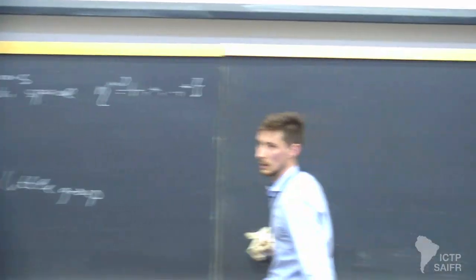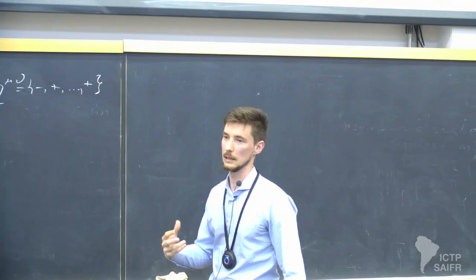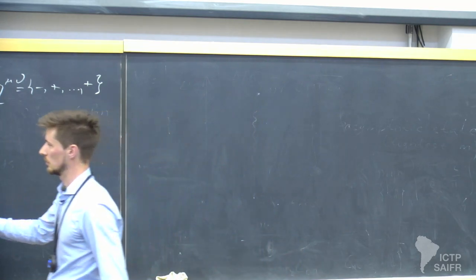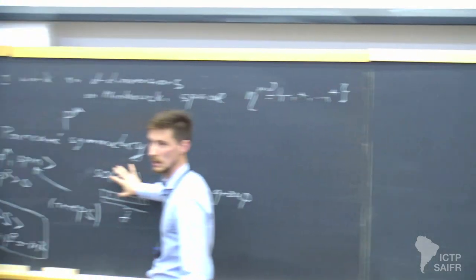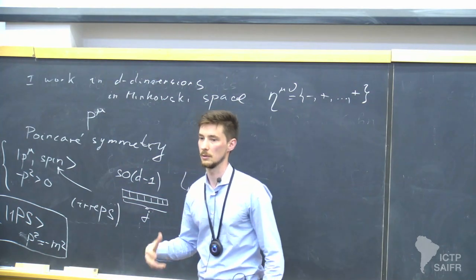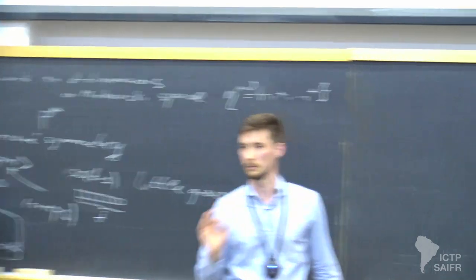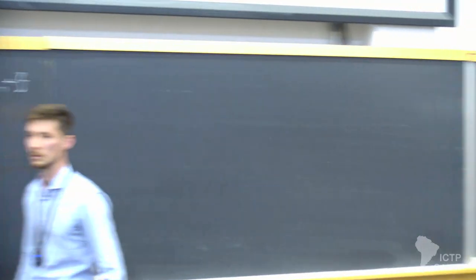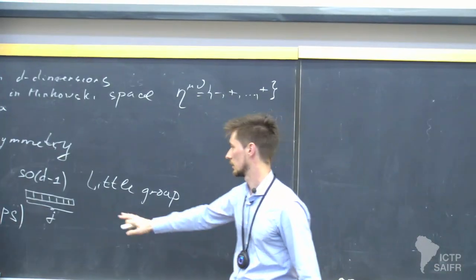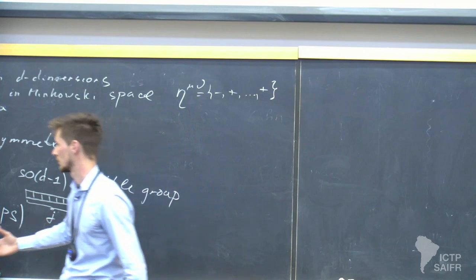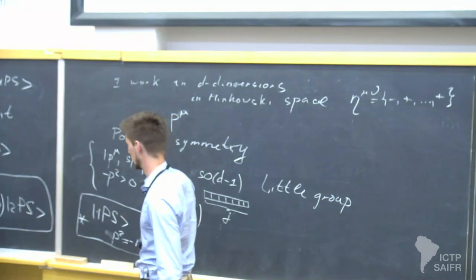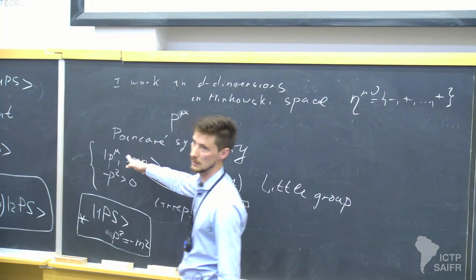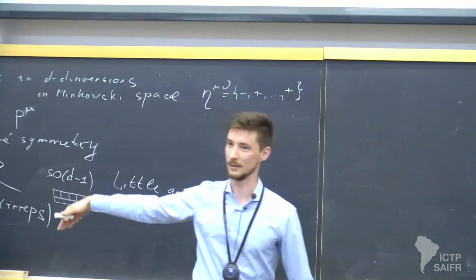For example in four dimensions, if you take generic spin representations, it's much more complicated and you cannot do it in generic dimensions easily. I take a specific class — traceless symmetric — which is simple. Otherwise you get helicities, which I can ignore for now.